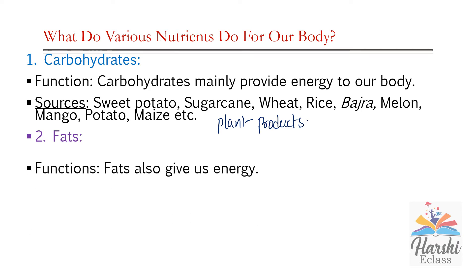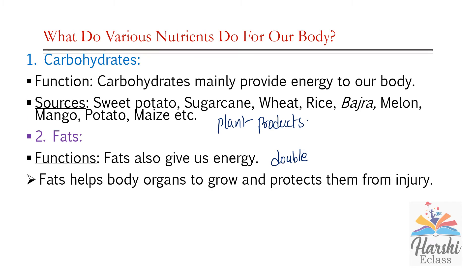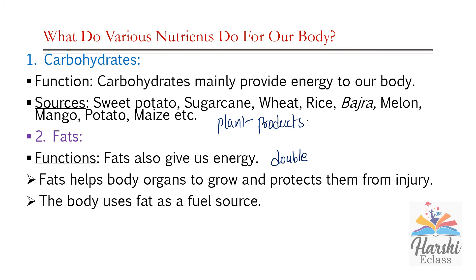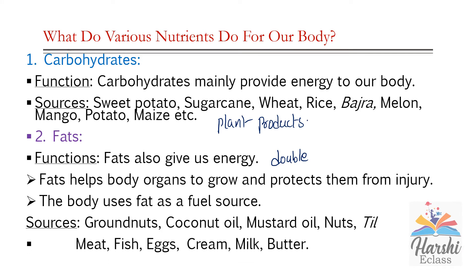Next, fats. Fats also give us energy — in fact, fats give double the amount of energy compared to carbohydrates. Fats help body organs to grow and protect from injury. The body uses fats as a fuel source. For example, if a person is fasting and not eating anything for the entire day, our body uses the fat present in our body for producing energy. Sources of fat: plant sources include groundnuts, coconut oil, mustard oil, nuts, and til. Animal sources are meat, fish, eggs, cream, milk, and butter.